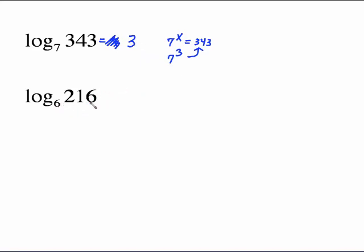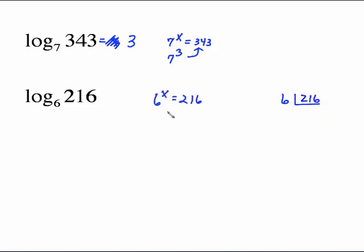6 to the what equals 216? Or 6 to the x equals 216. Use your successive divisions — remember, you divide by whatever the base is, so divide by 6. The value you'll put on 6 to get 216 is 3. So log base 6 of 216 equals 3 because 6 to the third equals 216.